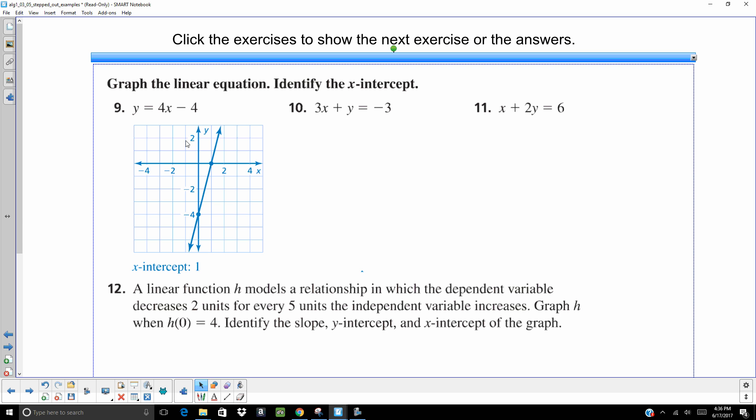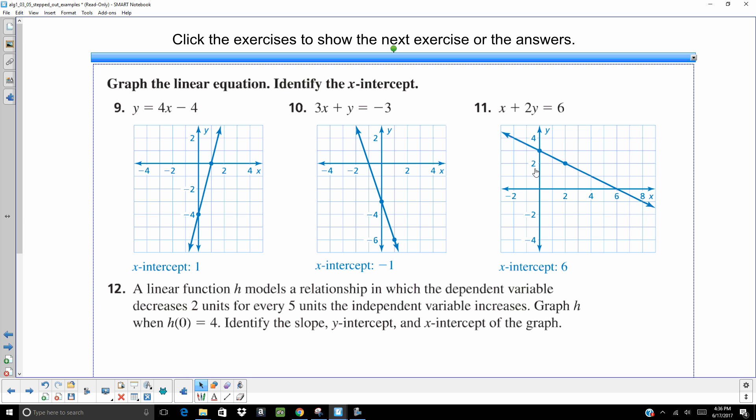All right. My y-intercept is negative 4. My slope is 4. That means I go up 4, right 1. My y-intercept is 1. Here, when I put it into slope-intercept form, I get y equals negative 3x minus 3. My y-intercept is negative 3. Go up 3, left 1. And my y-intercept is negative 1. My y-intercept is going to be 3. And my x-intercept is 6.